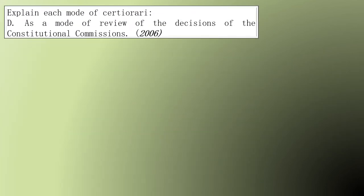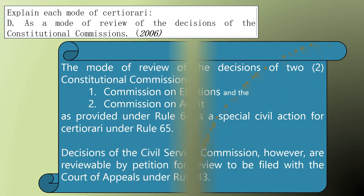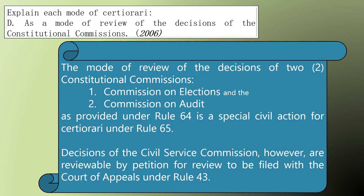2006 bar question: Explain certiorari as a mode of review of the decisions of the Constitutional Commissions. When discussing Constitutional Commissions, take note — there are three. So do not limit your answer to Rule 64. The Constitutional Commissions are the COA, COMELEC, and the Civil Service Commission. As far as COA and COMELEC are concerned, it is a Special Civil Action for Certiorari under Rule 65 filed in the Supreme Court. How about the Civil Service Commission? You file it in the Court of Appeals and it is a Petition for Review under Rule 43.